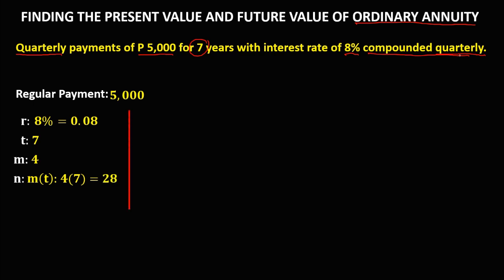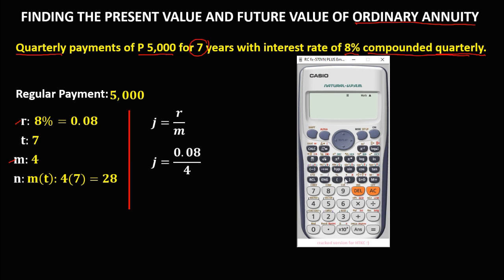First, we need to solve for the interest per period using the formula: rate divided by the compounding period. The rate is 0.08 and the compounding period M is 4. So 0.08 divided by 4 gives us an interest per period j equal to 0.02.